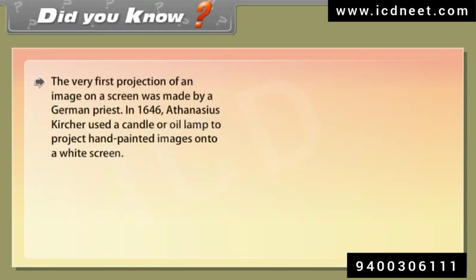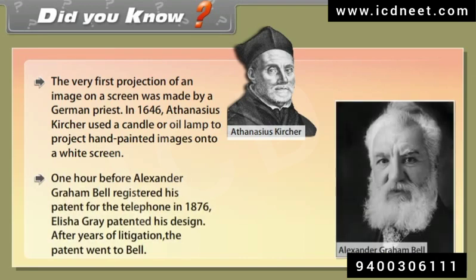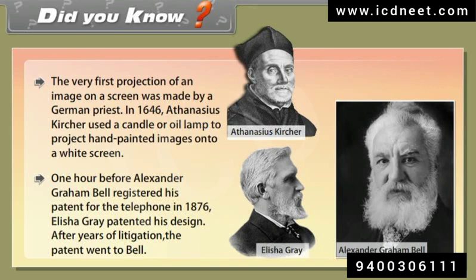The very first projection of an image on a screen was made by a German priest in 1646 — Athanasius Kircher — who used a candle or oil lamp to project hand-painted images onto a white screen. One hour before Alexander Graham Bell registered his patent for the telephone in 1876, Elisha Gray patented his design. After years of litigation, the patent went to Bell.